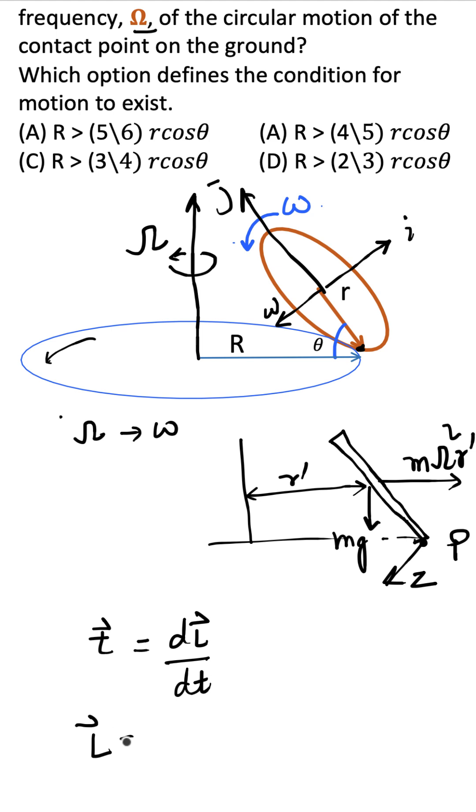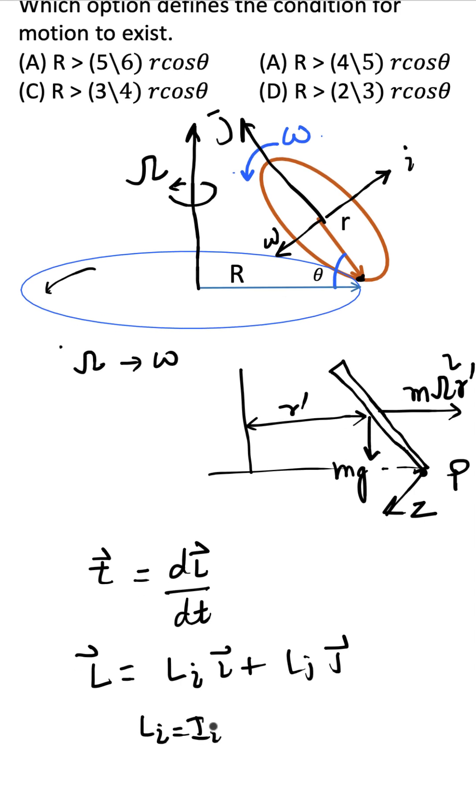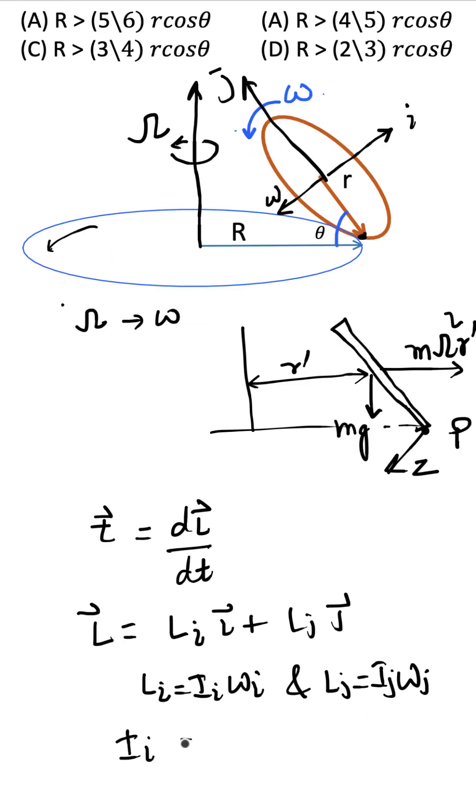So angular momentum vector is L_i i-hat plus L_j j-hat. Find out L_i and L_j, where L_i is I_i omega_i and L_j is I_j omega_j. You already know that I_i is just half mr squared and I_j is 1/4 mr squared.